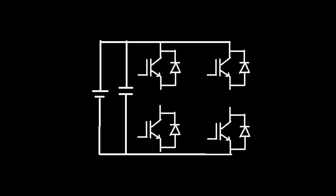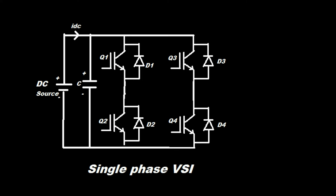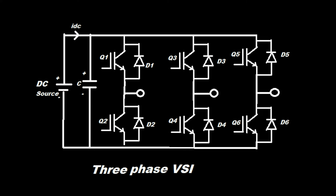Let's look at the diagram of single phase VSI and three phase VSI. It consists of one DC voltage source, transistors for switching, and one large DC link capacitor. Three phase VSI consists of six transistors with six anti-parallel diodes and three load terminals, one DC source, and one large DC link capacitor.